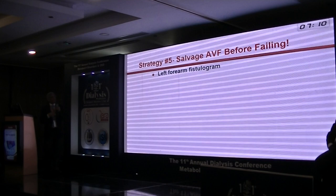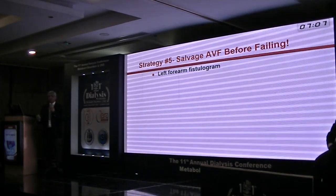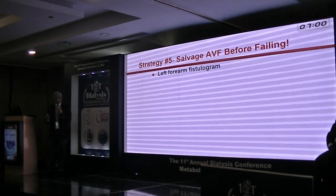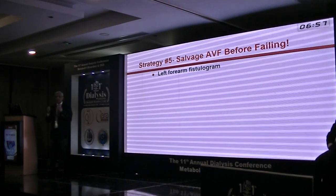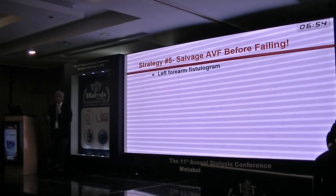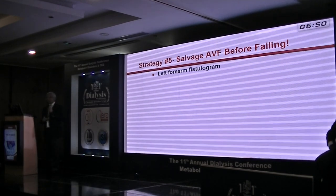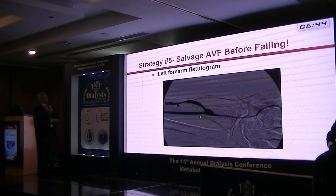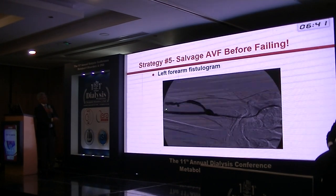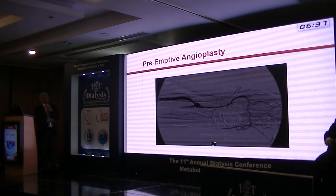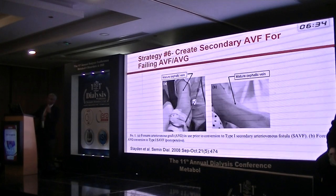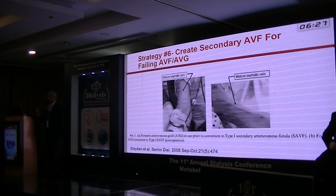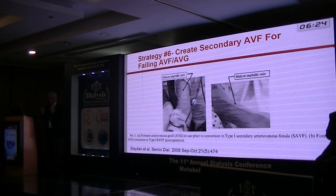Strategy five is to salvage the fistula. If you place a fistula and it is not maturing, you cannot simply wait indefinitely. Generally, if the fistula is not adequate at four to six weeks, you should be intervening — it will never mature on its own after that point. An example: a fistula not maturing well had a stenosis that was treated with angioplasty, and the fistula was salvaged. The patient did require another angioplasty later, but you can salvage these. If there are accessory veins, you can ligate or coil those — we demonstrated coil placement in a workshop this morning.